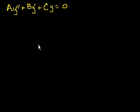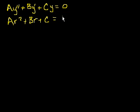If that's our differential equation, then the characteristic equation of that is ar squared plus br plus c is equal to 0.